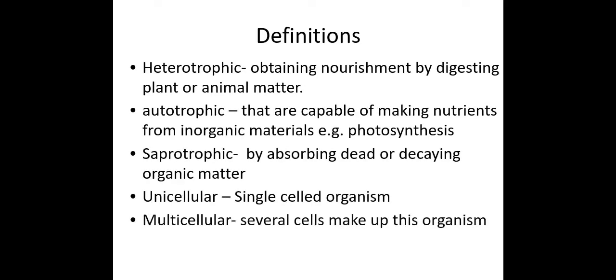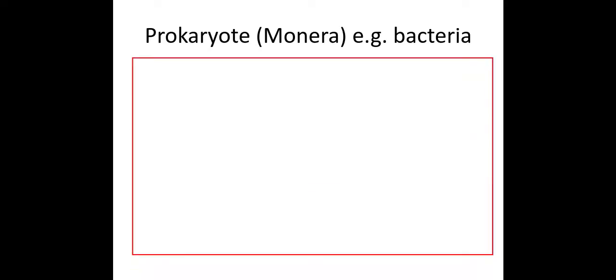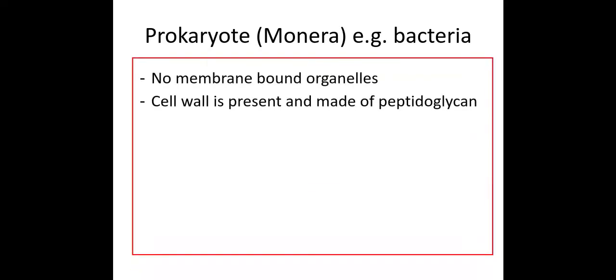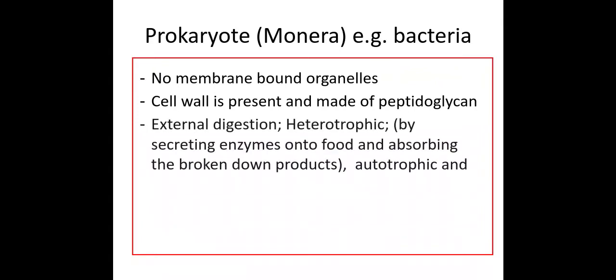For Prokaryotae — everything in the red box is taken directly from the mark scheme — they have no membrane-bound organelles, they have a cell wall made of peptidoglycan, they can be heterotrophic, autotrophic, or saprotrophic in feeding mode, and they are unicellular.